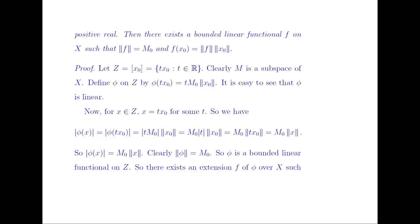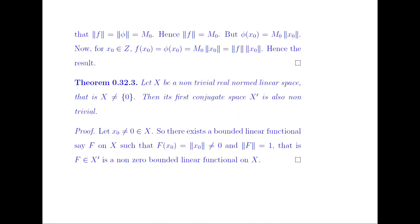So there exists an extension f of φ over X such that norm of f = norm of φ = M₀, by the Hahn-Banach theorem. Hence norm of f = M₀. For X₀ belonging to Z, f(X₀) = φ(X₀) = M₀ · norm(X₀) = norm(f) · norm(X₀). Hence the result.